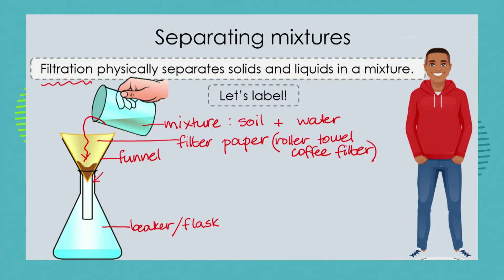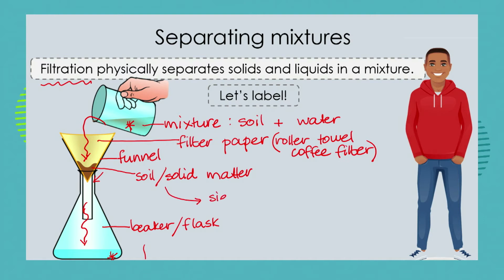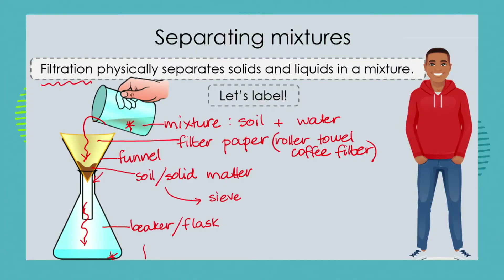What do you think is going to happen? We see that the liquid component filters through and the water is a lot cleaner than the original water sample. In the filter paper we will collect the soil or solid matter. We could then go on and sieve the solid matter to get larger and smaller particles separated from each other. That's our process of filtration.